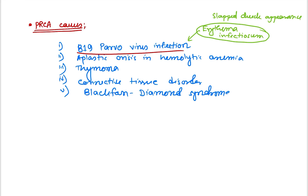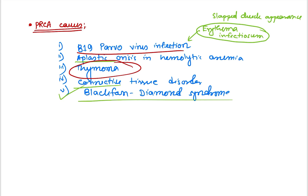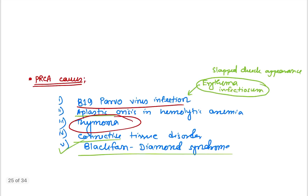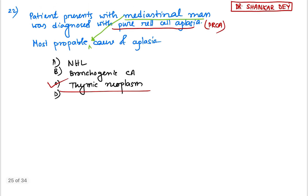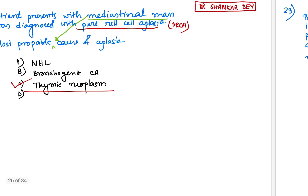Aplastic crisis can also cause pure red cell aplasia. Thymoma, some connective tissue disorders, and one congenital disorder — Diamond-Blackfan syndrome — can also cause pure red cell aplasia. So the answer is thymic neoplasm.